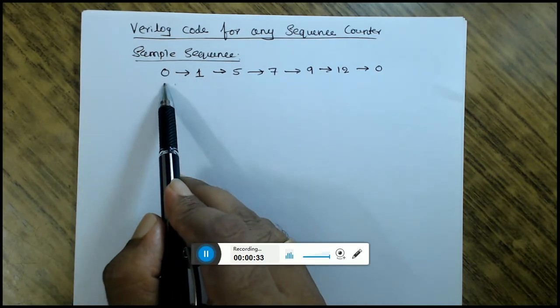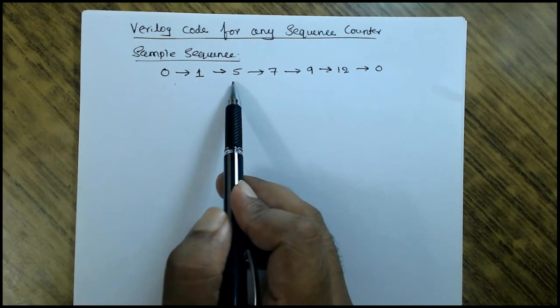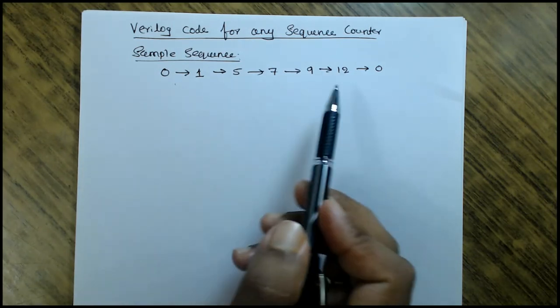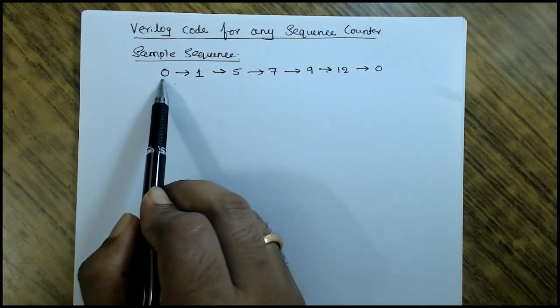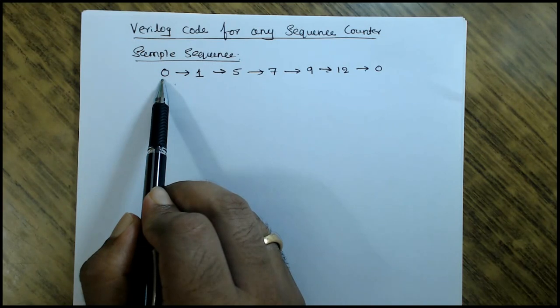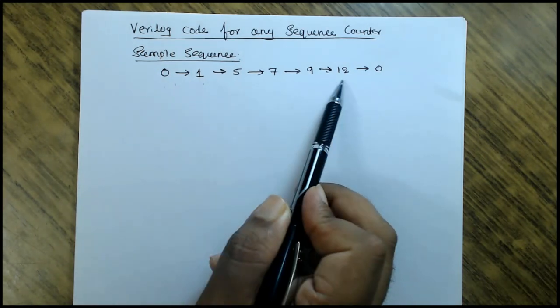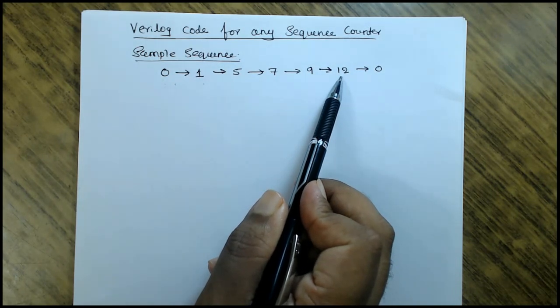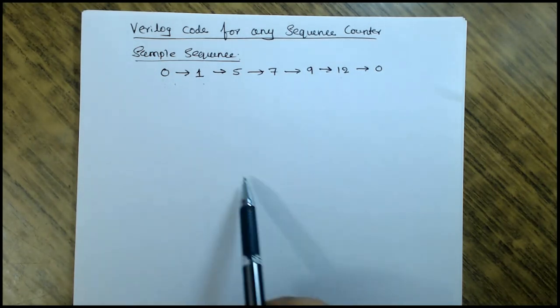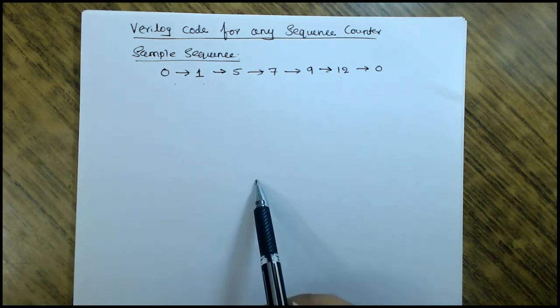The counter starts counting from 0, 1, 5, 7, 9, 12, 0, 1, 5, 7, 9, 12 - it goes on continuing. When Q is 0, the next state should be 1. When Q is 1, the next state should be 5. When Q's value is 12, its next state should be 0. It should count in a sequence.